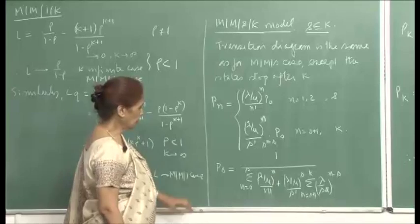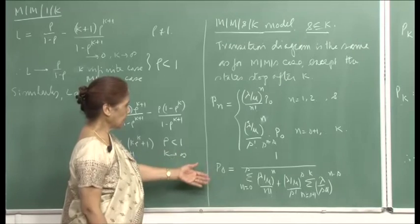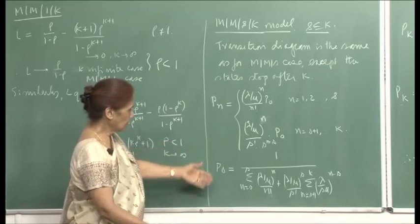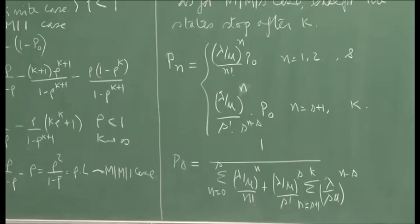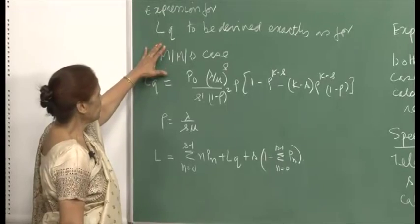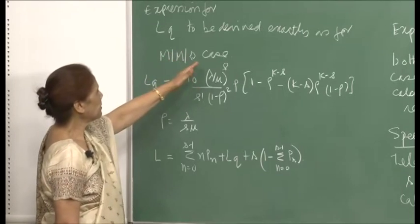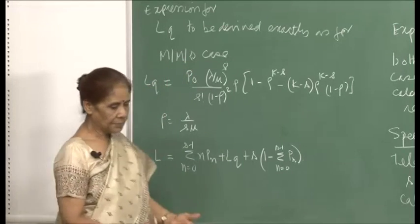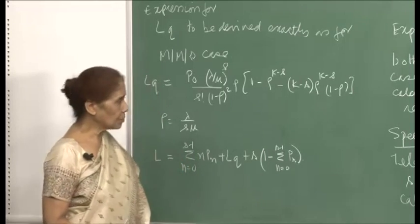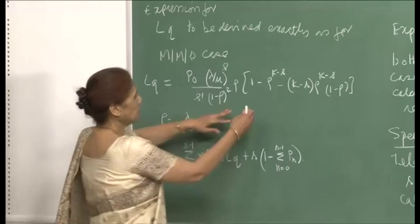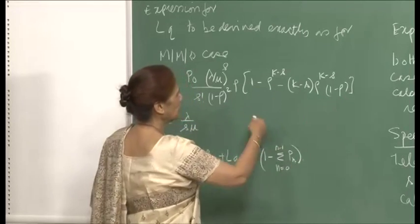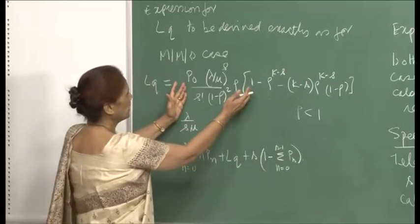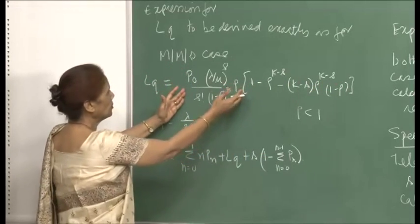For n from 1 to s: p_n equals (lambda/mu)^n / n! times p_0. For n from s+1 to k: p_n equals (lambda/mu)^n / (s! times s^(n-s)) times p_0. p_0 is obtained by summing all probabilities to 1. The expression for L_q is derived exactly as for the MMS case where k is infinity, except the summation runs from 0 to k instead of 0 to infinity. When k goes to infinity and rho is less than 1, the expression reduces to the MM S case result.